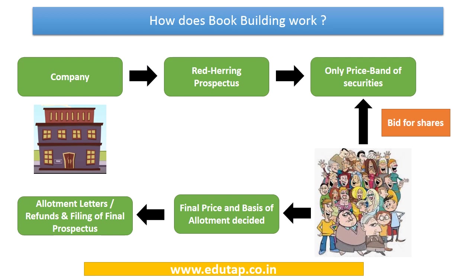A company coming up with an issue of securities initially files a Red Herring Prospectus instead of a final prospectus. This prospectus mentions only a price band and not an exact price. Investors bid within this price range — for example, ₹90 or ₹100 — and based on the bids received, the final price and basis of allotment are decided.